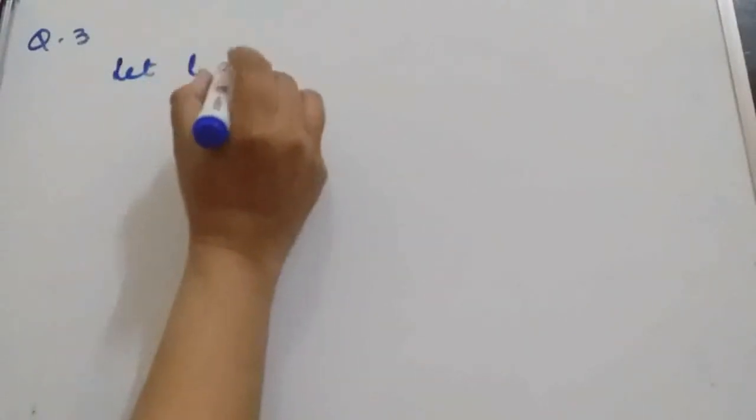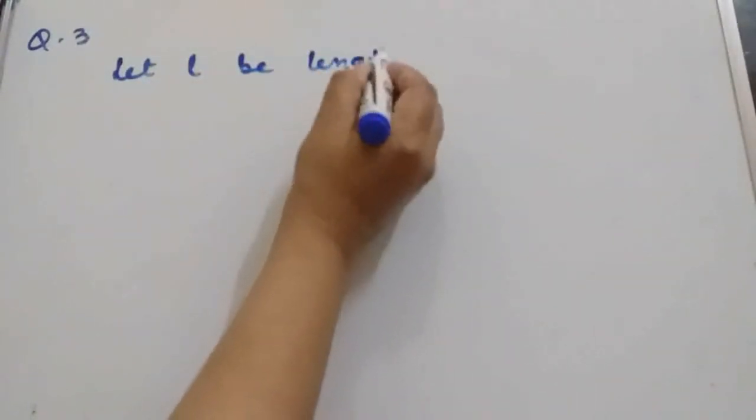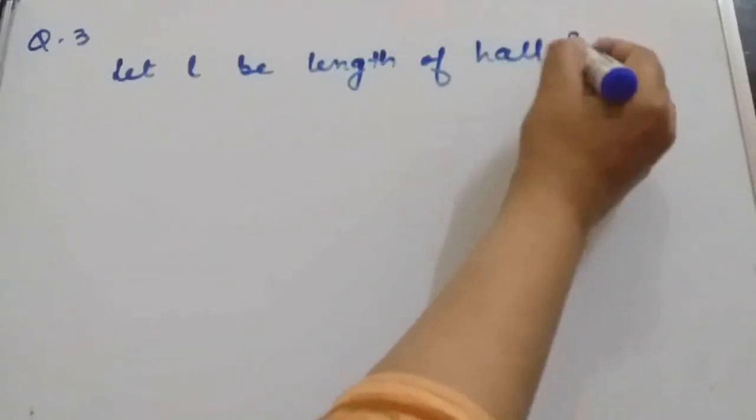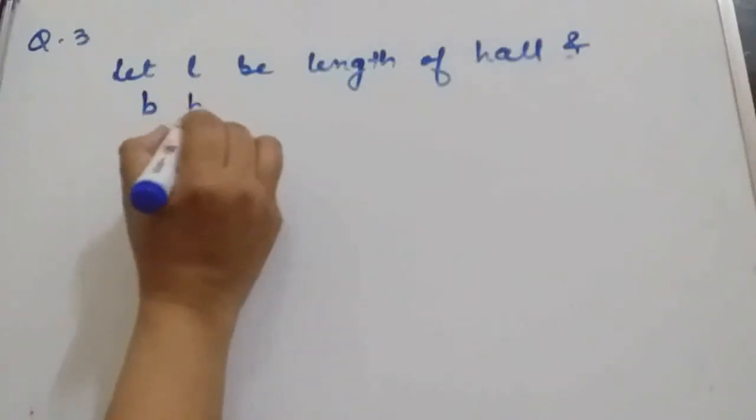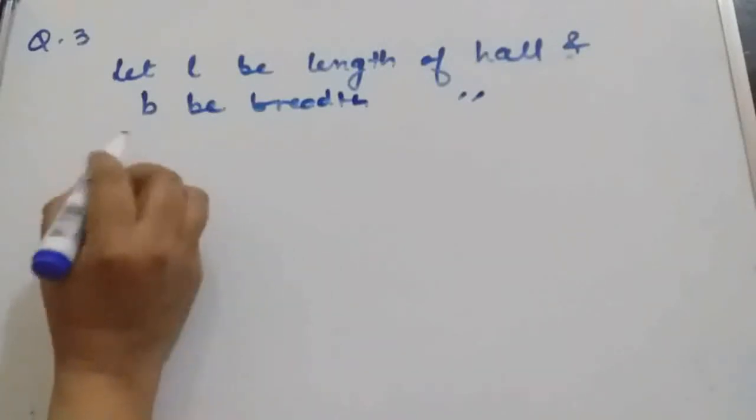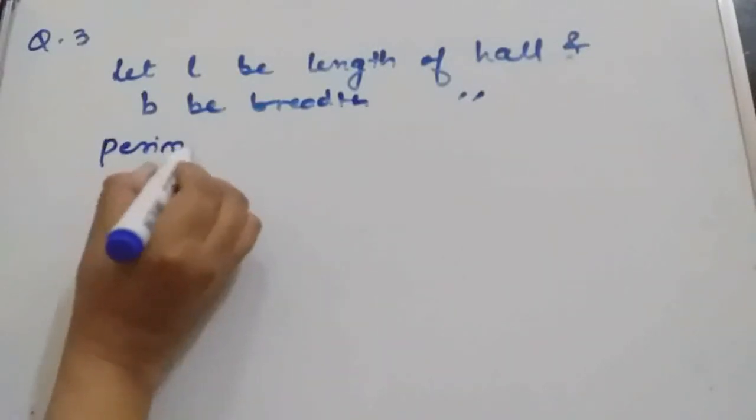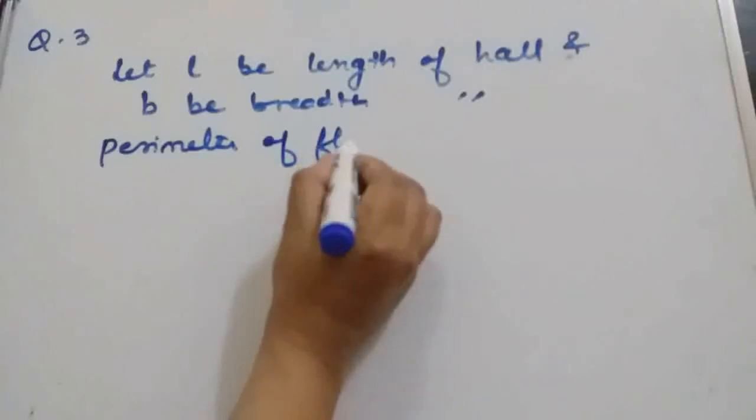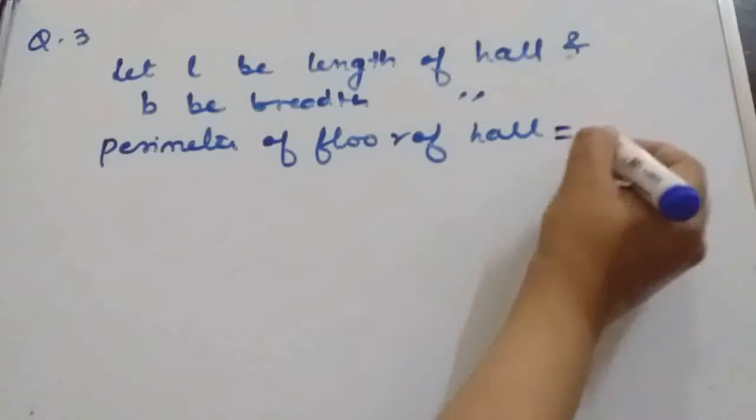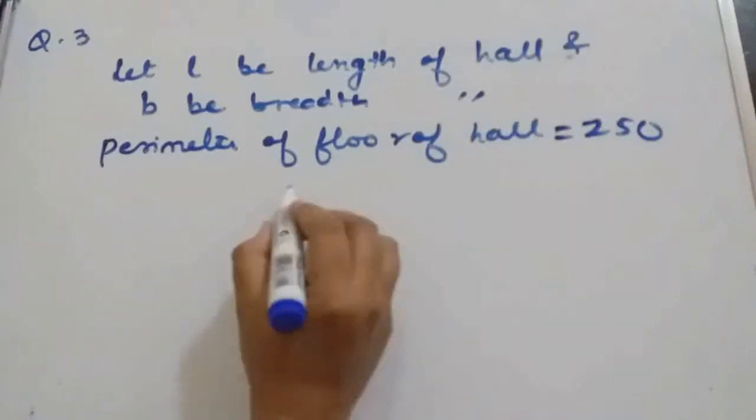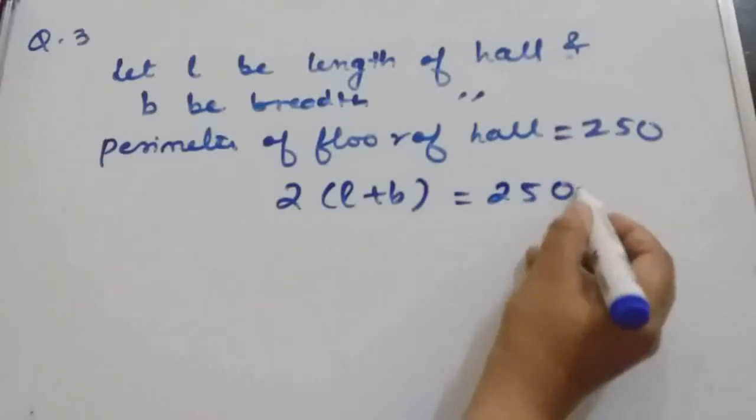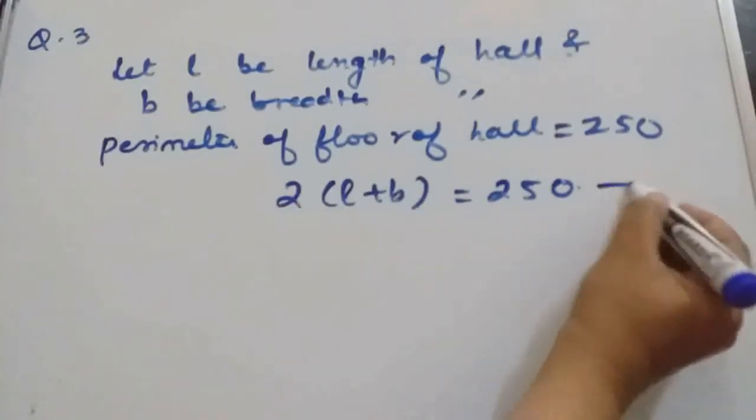Let L be the length of hall and B be the breadth of the hall. So perimeter of the floor of the hall will be, it is given 250. But what will be perimeter? 2 into L plus B is equal to 250. This we will keep as it is. Suppose equation 1.